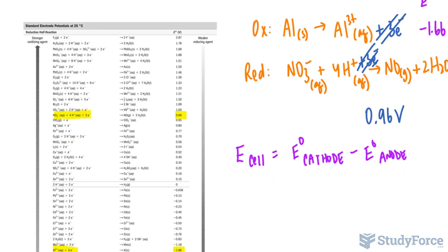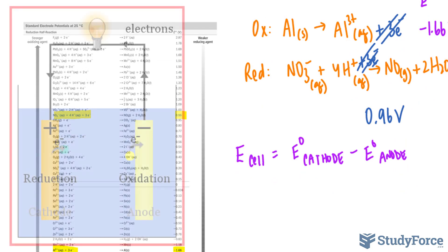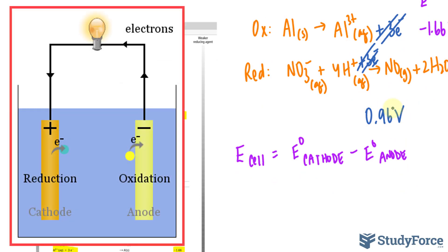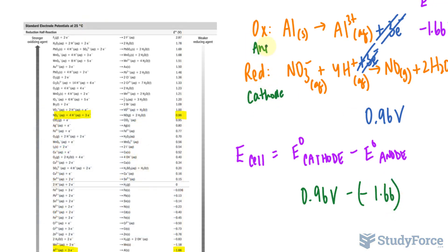Let me write down E cell is equal to the electrode potential of the cathode minus that of the anode. Now to determine which of these is at the cathode, the cathode is always the reduction. So we'll take 0.96 volts minus this number, negative 1.66. And I'll write this down that this is the cathode and this is the anode.